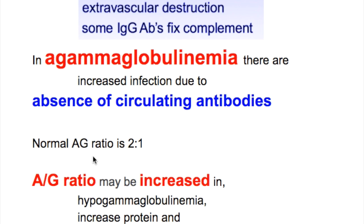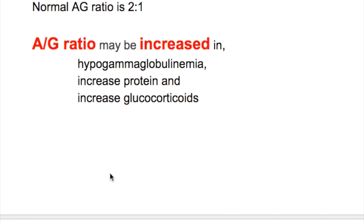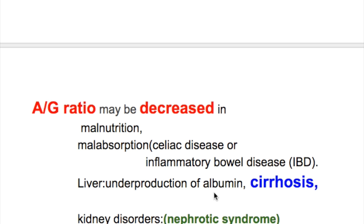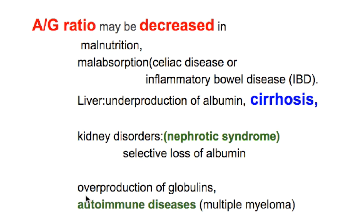What is the normal AG ratio? The normal AG ratio is 2:1. The AG ratio may be increased in hypogammaglobulinemia, increased protein, and increased glucocorticoids. The AG ratio may be decreased in malnutrition, malabsorption as in celiac disease or inflammatory bowel disease, liver disease and underproduction of albumin as in cirrhosis, kidney disorders and nephrotic syndrome with selective loss of albumin, or overproduction of globulins as in autoimmune disease and multiple myeloma.